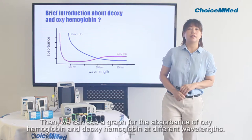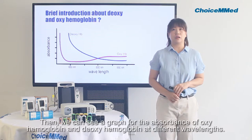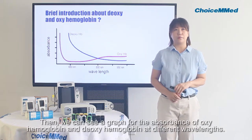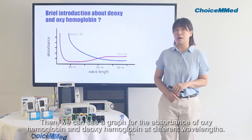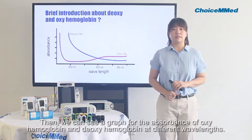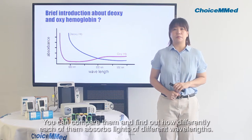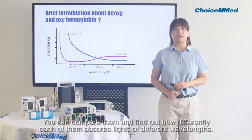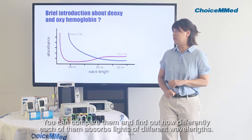Then we can see a graph showing the absorbance of oxygenated and deoxygenated hemoglobin at different wavelengths. You can compare them and find out how differently each absorbs light of different wavelengths.